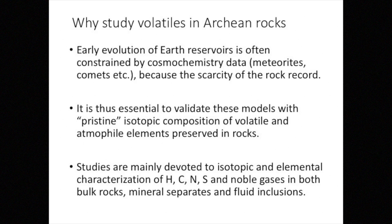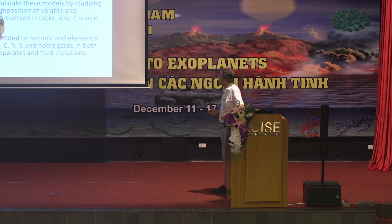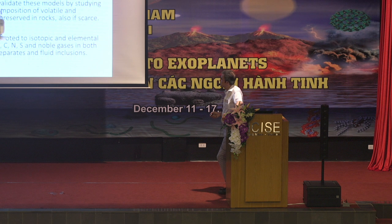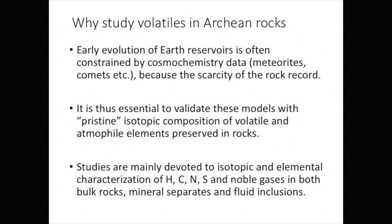The first question is: why do we want to study volatiles or atmosphere in Archean rocks? Because most of the evolutionary models of the surface environment of the early Earth — like the atmosphere and the oceans — are based mostly on constraints using cosmochemical data from meteorites, comets, etc., because of the scarcity of the isotopic record we have on Earth. We have very few rocks and very few outcrops to obtain good data, but it is essential to validate these models by studying pristine isotopic compositions.